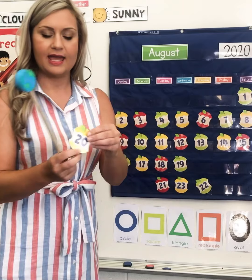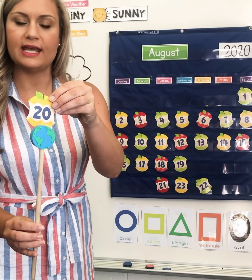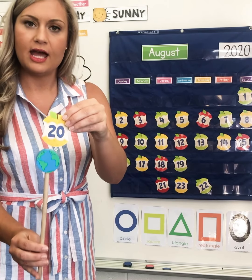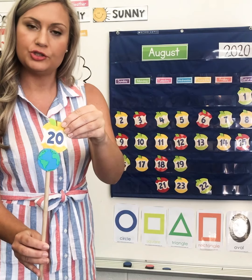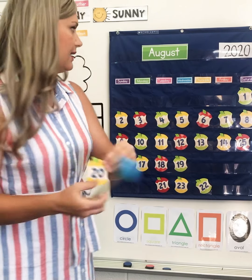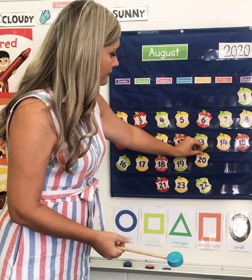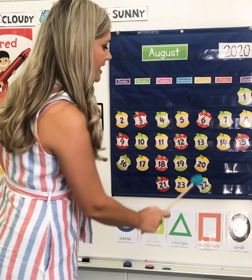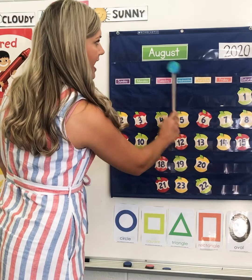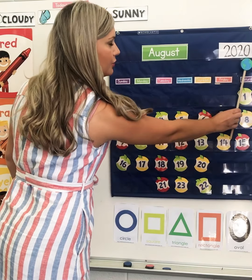Today is August 20th. Let's look here at the number 20. A 20 is a 2 and a 0. Today is Thursday, August 20th, 2020.